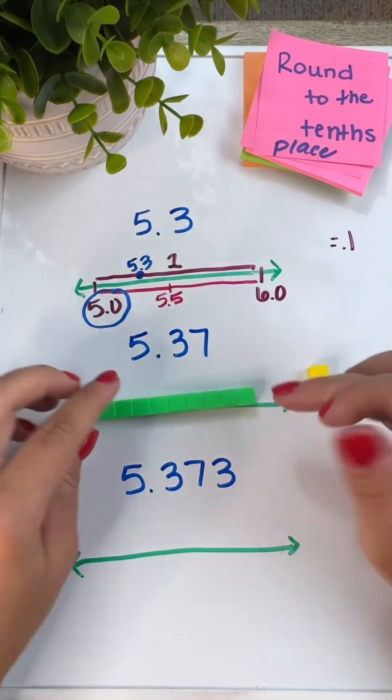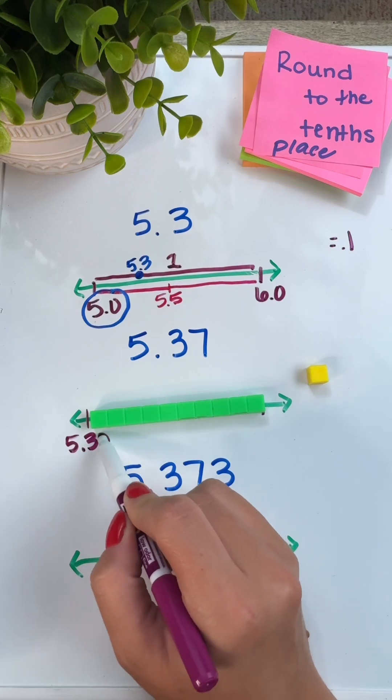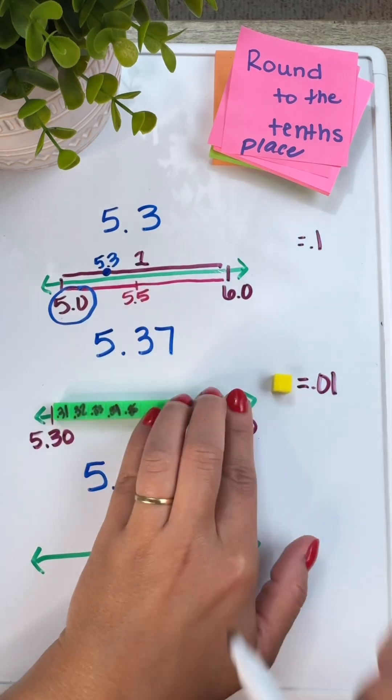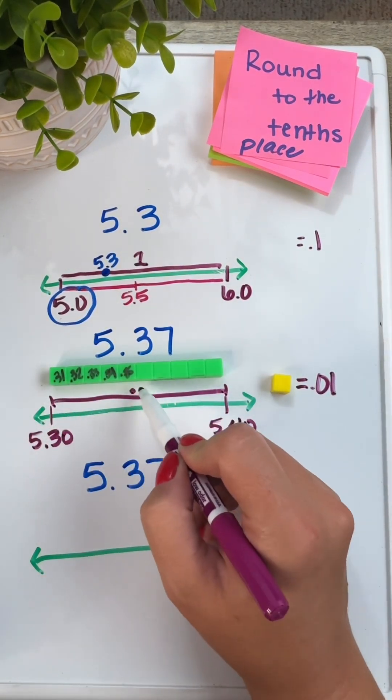And we can do the same representation when we're rounding to the tenths and hundredths. So if you have students struggling to see that distance between your benchmark numbers, pull out a base 10 rod and provide a value to it.